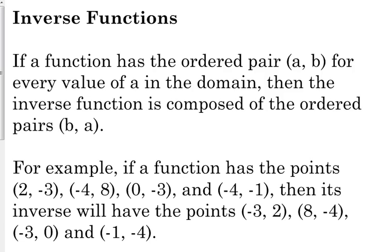So if we have these points: (2, -3), (-4, 8), (0, -3), and (-4, -1), then its inverse would have the points (-3, 2), (8, -4), (-3, 0), and (-1, -4). It just switches the x and y coordinates.